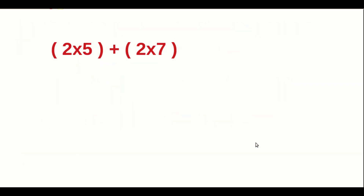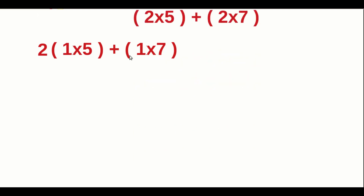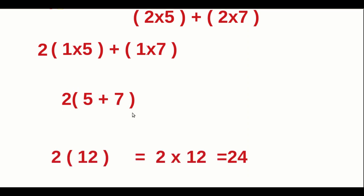Consider the same operation — double the numbers 5 and 7 and then add. Here we are taking the 2 from both sides outside the bracket, like this. The initial operation changes to 2 into 5 plus 7. 5 plus 7 means 12. 12 into 2 is equal to 24. Again we got the same answer. In the previous case we also got 24, but we did the operation in a different way — we took 2 outside, but the final answer remains unchanged.